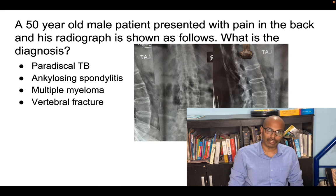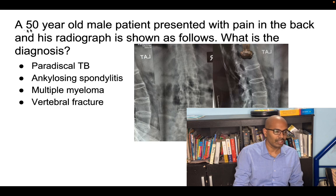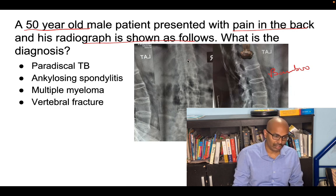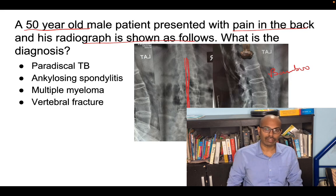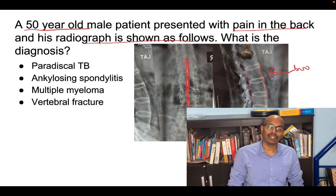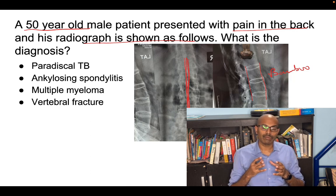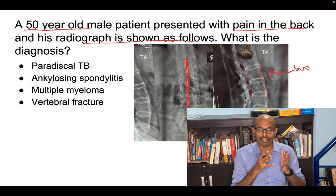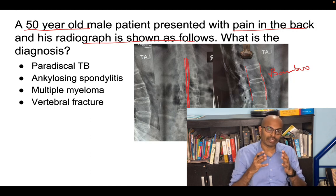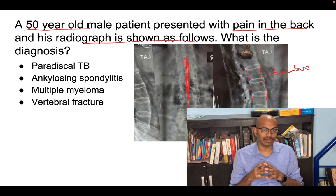The first question showed a very typical pathognomonic image of a 50-year-old male patient presenting with pain in the back, with a radiograph as shown. Based on student recall, it is a bamboo spine — typically seen in ankylosing spondylitis. They also saw the typical dagger sign: the spinous processes are fused, forming a thin dagger-like structure on the radiograph, along with fusion of the anterior and posterior longitudinal ligaments. Despite the age of 50 being slightly outside the typical spectrum, the radiograph was pathognomonic.